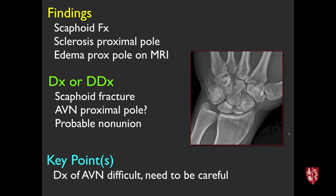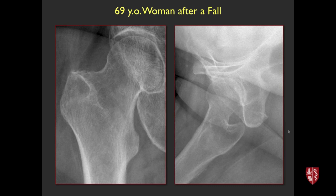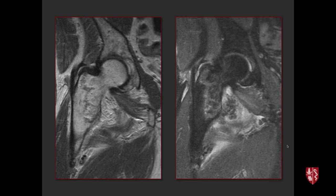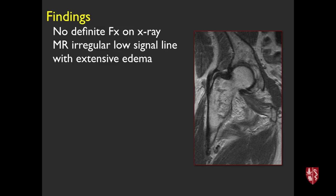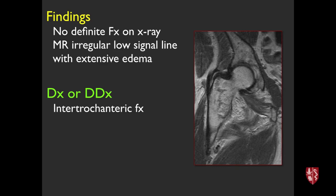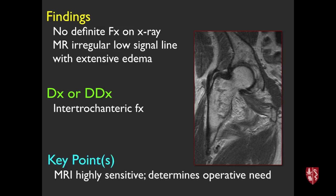69-year-old patient with pain after a fall. X-ray is not obviously abnormal, but MRI shows an irregular low-signal line — an intertrochanteric fracture that's radiographically occult or very subtle. MRI is very sensitive for these even in the fairly acute setting. It helps determine whether the patient needs surgery — whether the fracture goes all the way across the femur or is just isolated to the trochanter.